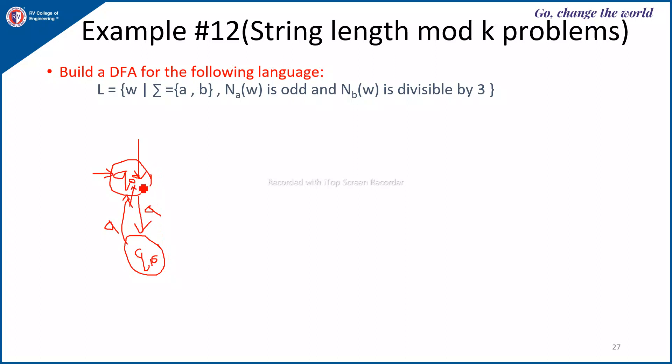Now from Q0, 0, if first B appears, A's count will not change. It remains the same modulo 2. Only the B's, the remainder modulo 3 is 1. If one more B appears, then Q0, 2.